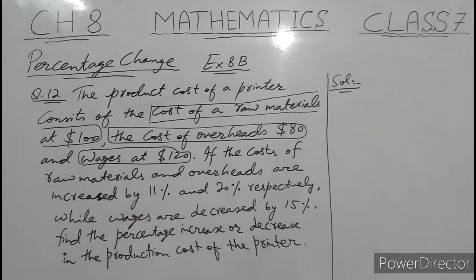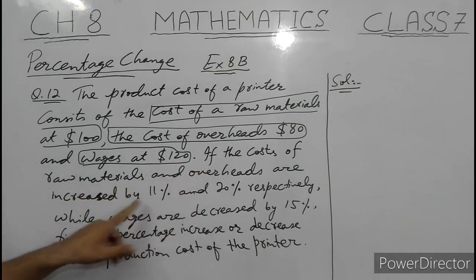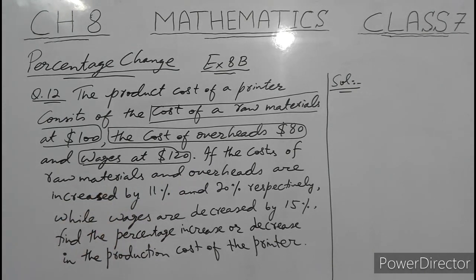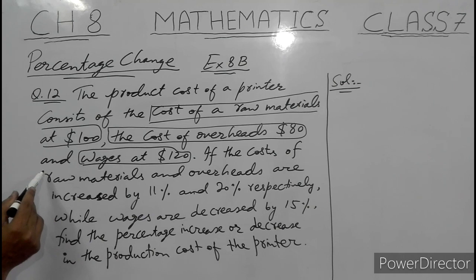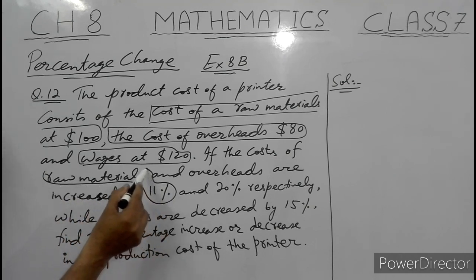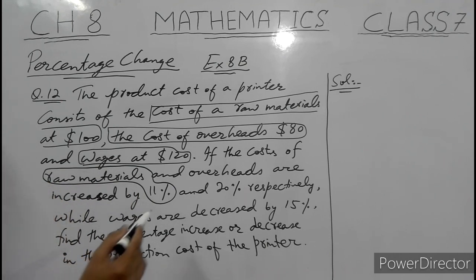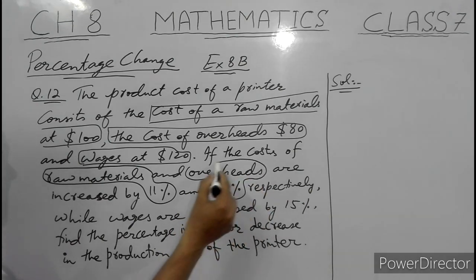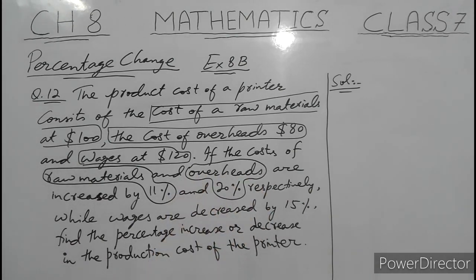The cost of the printer is obtained by adding the cost of raw materials, cost of overheads, and wages. Another thing given is: if the cost of raw materials and overheads are increased by 11% and 20% respectively, while wages are decreased by 15%.